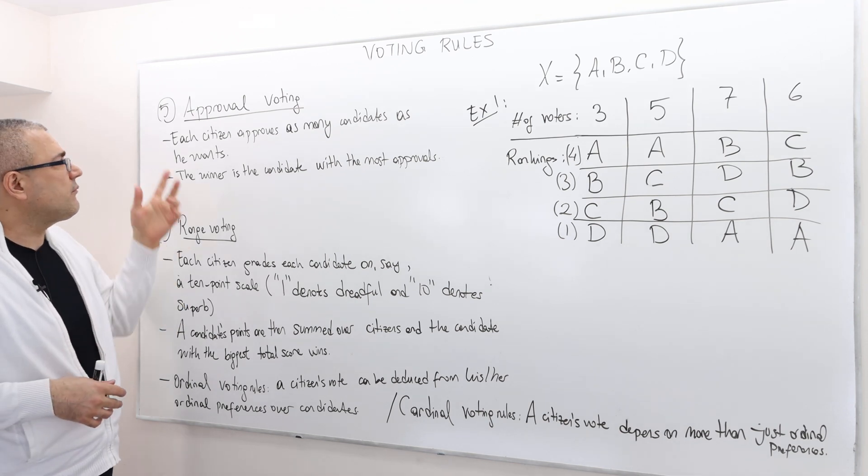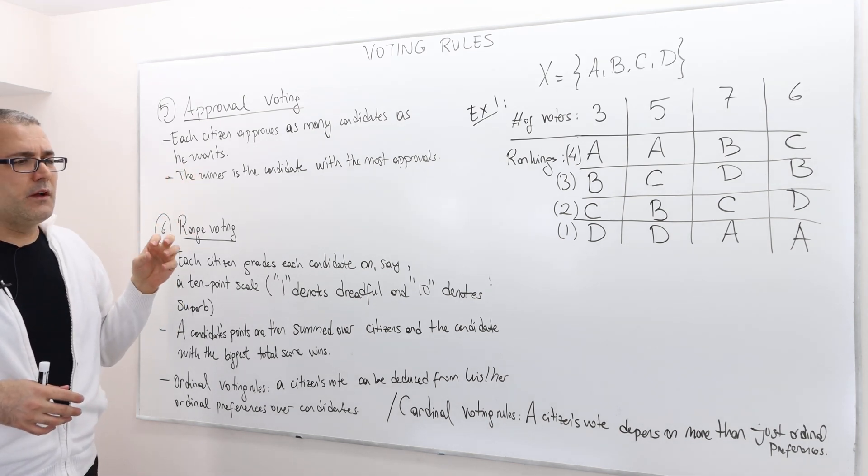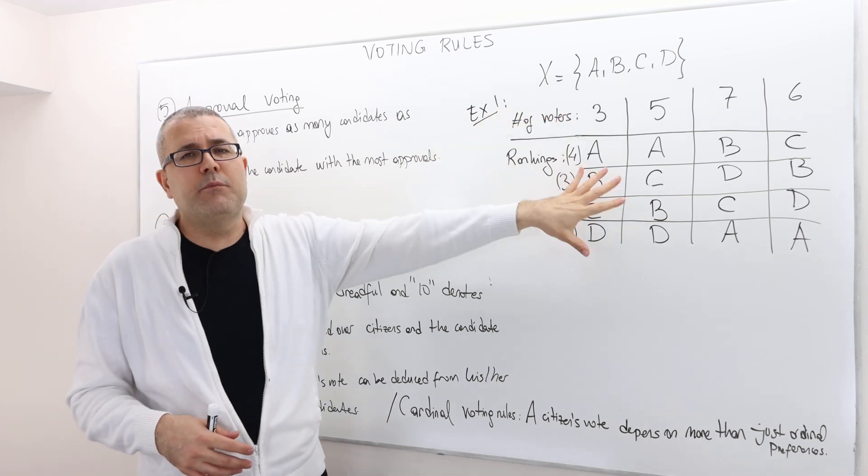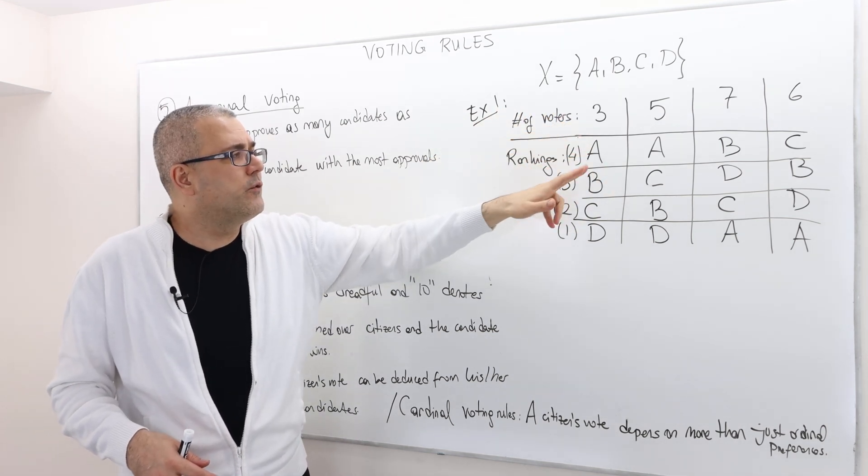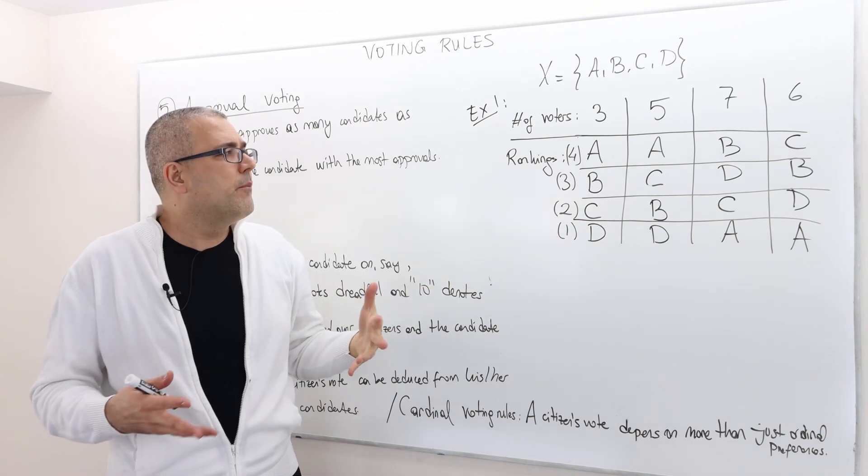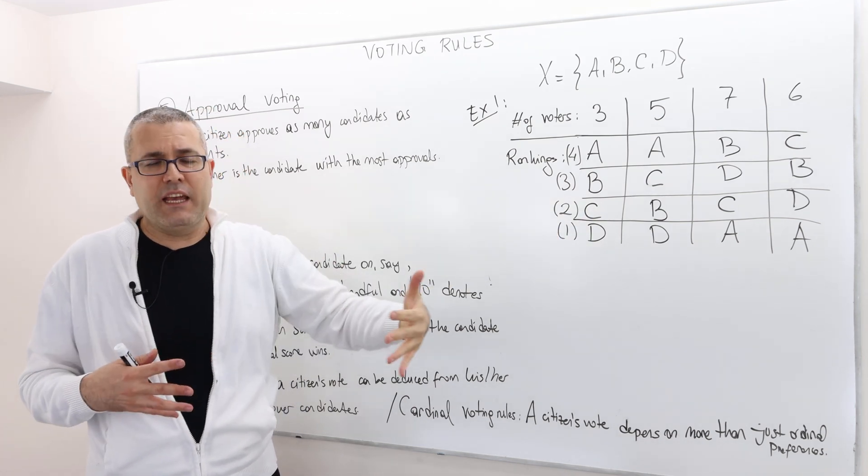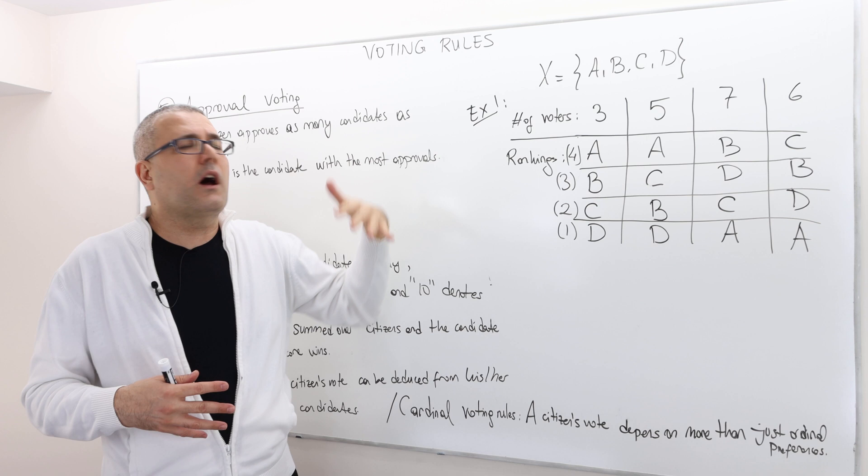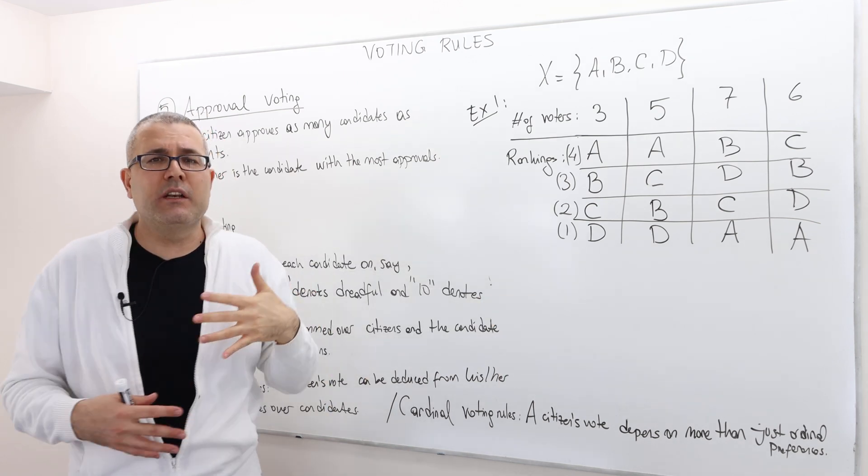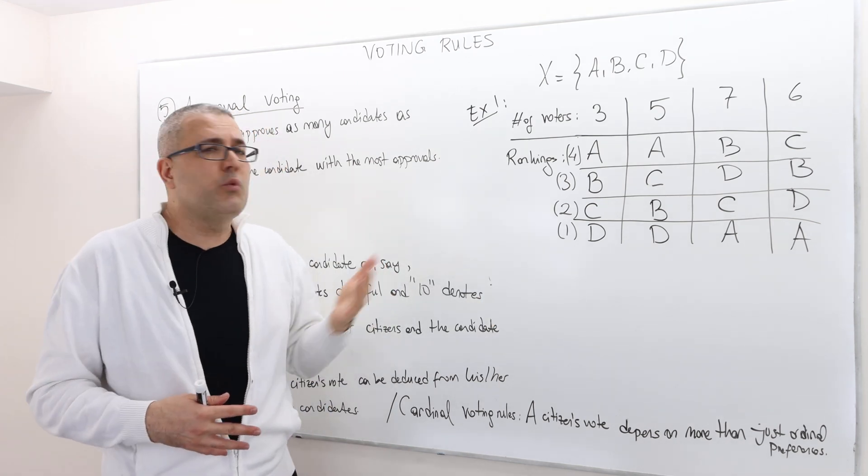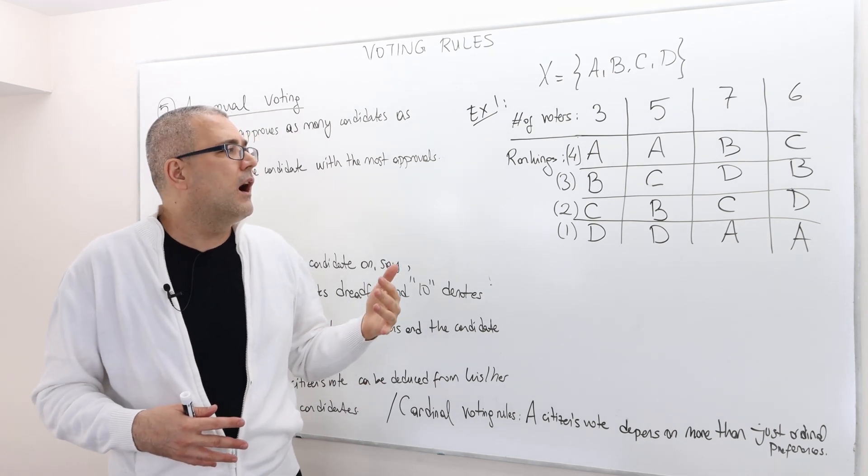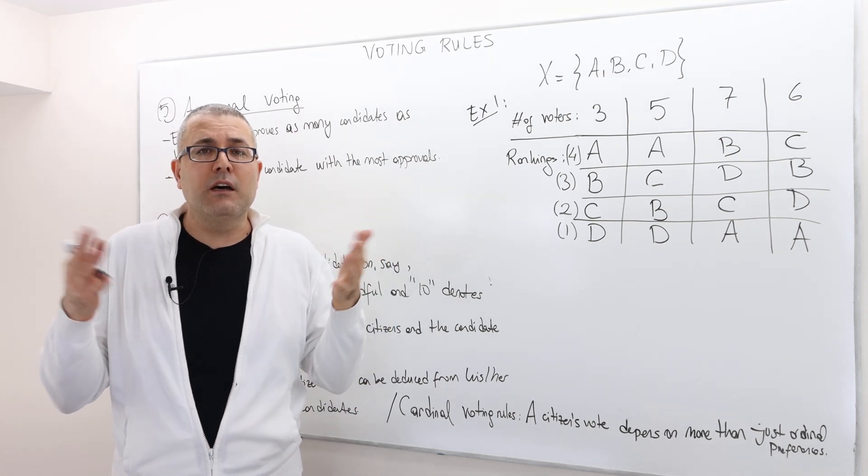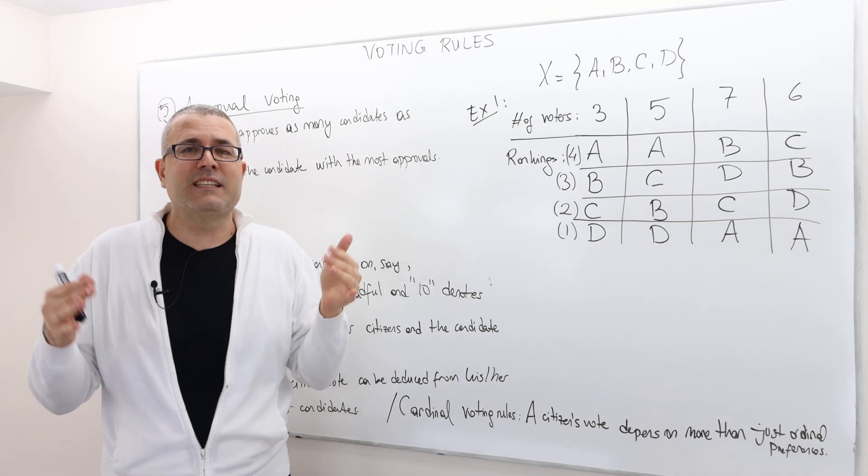Well, so here, for example, if this is the preference profile, those three guys prefer A to B, B to C, C to D. But if we ask him what are the candidates that he would approve, well, we need to also know about his preferences over, for example, sets like A, B,